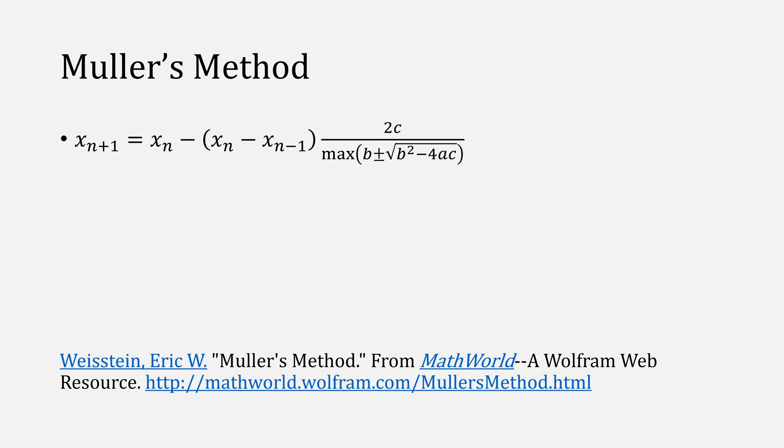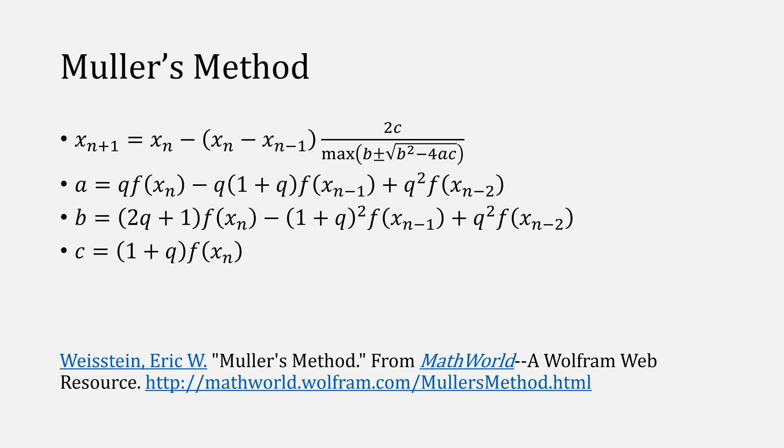This is the representation of Muller's method that I like, which uses points for a, b, and c, sort of resembling our quadratic equation approach that we saw earlier. Here the points a, b, and c are computed using these three equations. Notice that there's a variable called q, which is actually just given by this function here.